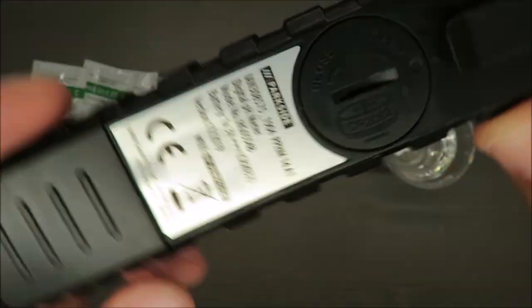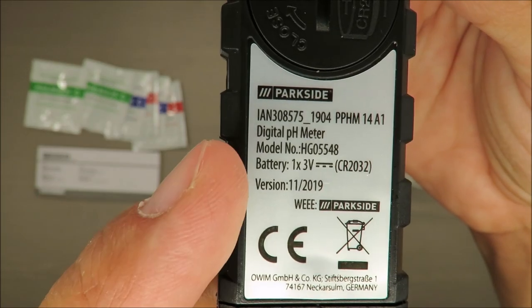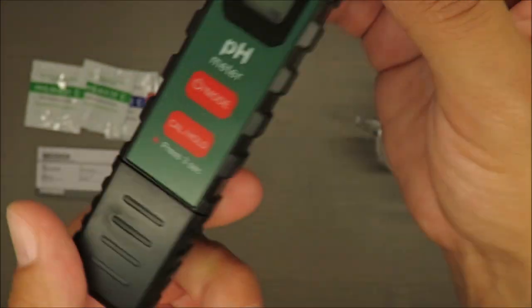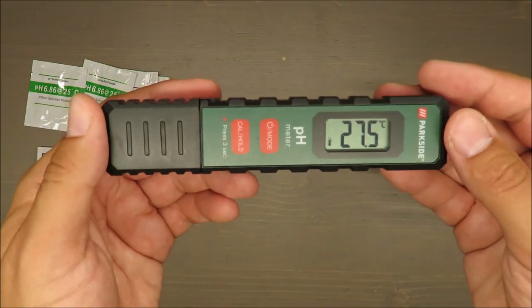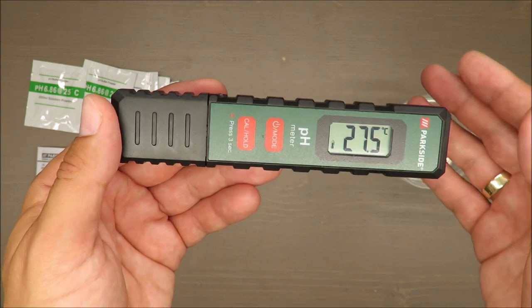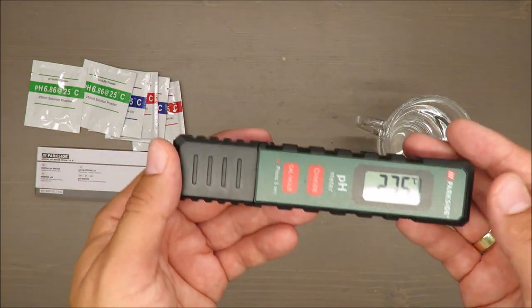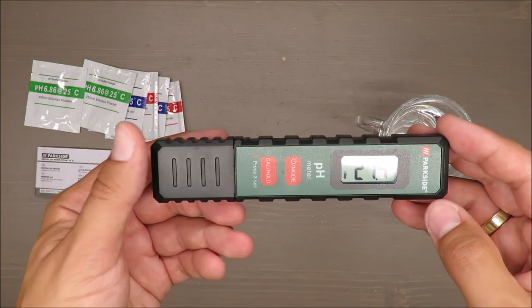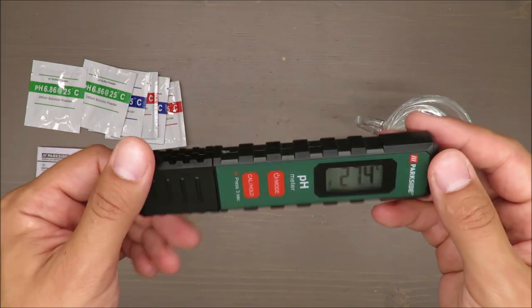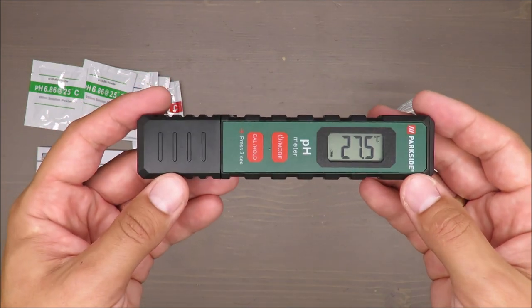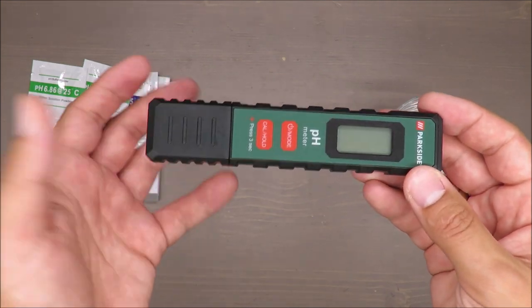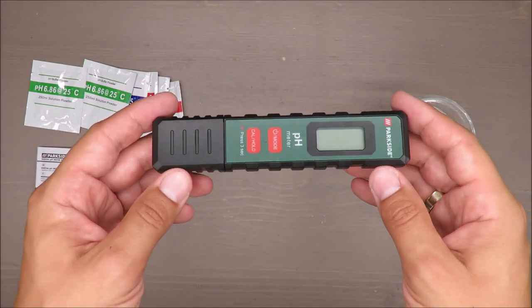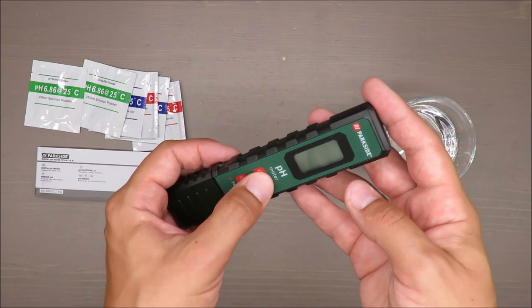What else? Basic features: measuring range is for pH from 0 to 14, so the whole range. Accuracy is 0.01 pH plus minus. Display resolution is 0.01. Temperature compensation is from 0 to 80 degrees Celsius, so you cannot check boiling water but near to it.